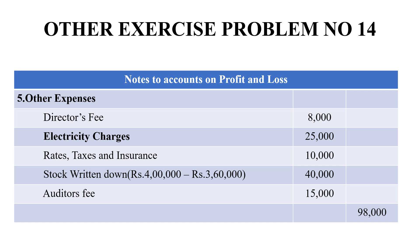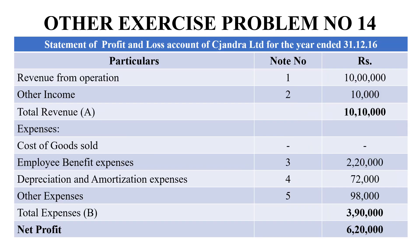Total depreciation and amortization expenses come to Rs. 72,000. Under other expenses: directors fees Rs. 8,000, electricity charges Rs. 25,000, rates, taxes and insurance Rs. 10,000, and auditors fees Rs. 15,000. Stock written down — in the trial balance, stock-in-trade at cost is Rs. 4,00,000, but revalued to Rs. 3,60,000, so Rs. 40,000 has gone down. Adding that, the total other expenses come to Rs. 98,000.